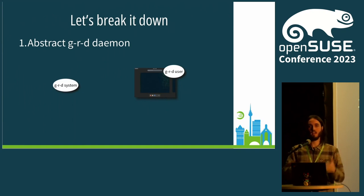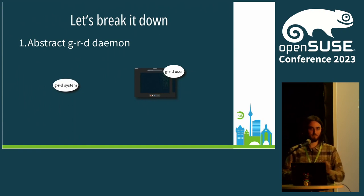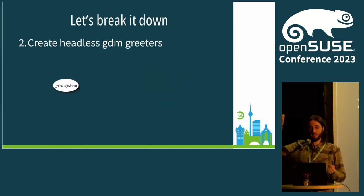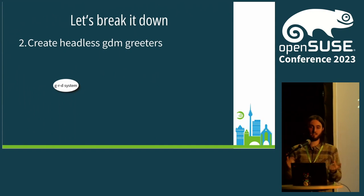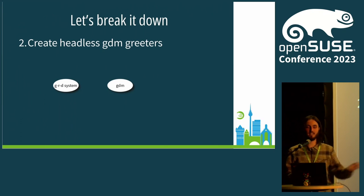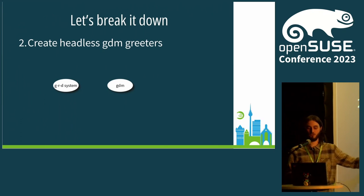I'm going to say 'user daemon' and 'system daemon' for short. When the RDP client connects, the GDM daemon will create the headless greeter. To make this possible, I've had to add a DBus interface that GDM exposes and that the system daemon is going to use. When a new RDP client connects and authenticates with the RDP protocol and that authentication succeeds, the system daemon will request to GDM: please create a greeter for me.